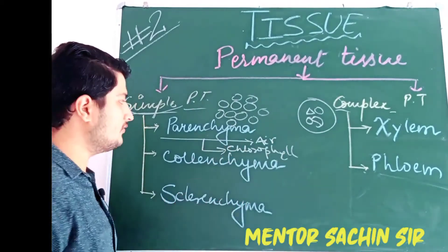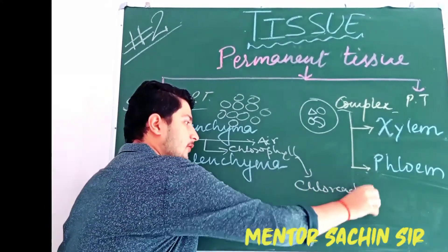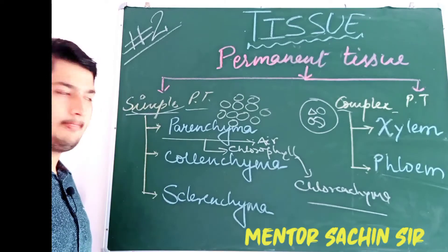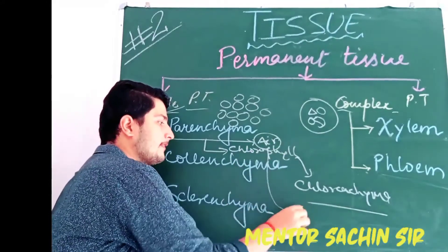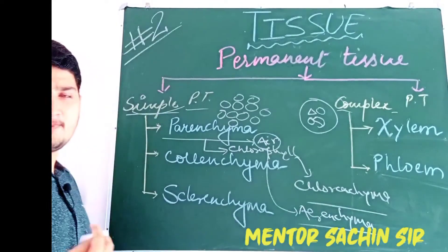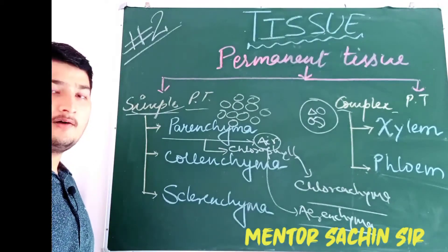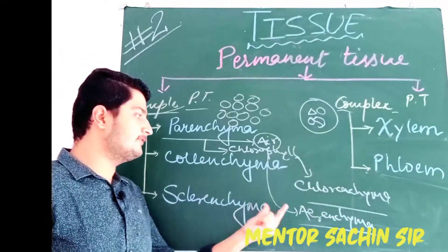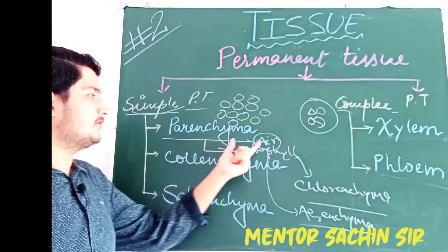The parenchyma which stores chlorophyll is known as chlorenchyma. Chlorenchyma is a type of parenchyma which stores chlorophyll. Aerenchyma is a type of parenchyma which stores air. You may have seen certain plants which are grown in aquatic habitats — such plants float on water. How do they float? They float because of the presence of air sacs in their body, and that air is present in the aerenchyma of the plant body.